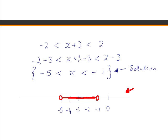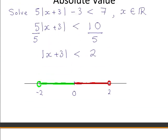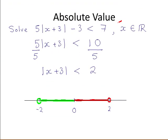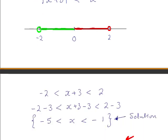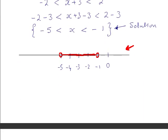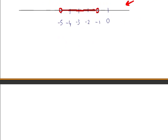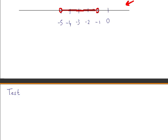Now we should check if we are correct. Only values between minus 5 and minus 1, when substituted in for x, will satisfy the original inequality. Looking at our solution set, we will test a value that is part of it.